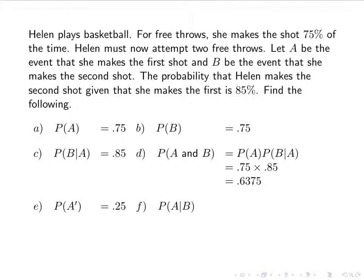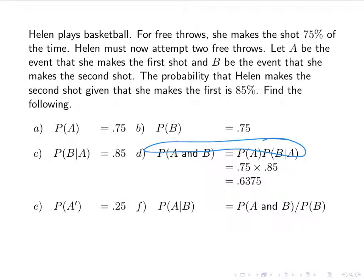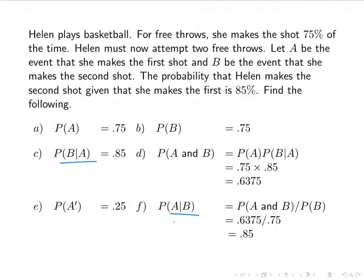Now let's find the probability of A given B — the probability she makes the first shot given she makes the second. We use: probability of A given B equals probability of A and B divided by probability of B. That's 0.6375 divided by 0.75, which gives 0.85. In general this will not equal the reverse, but here it does because P(A) equals P(B). The probability of A given B is not generally the same as the probability of B given A.